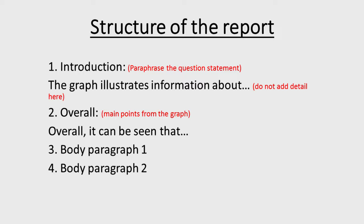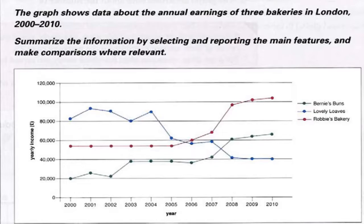Your next paragraph will be about the overall or general idea — just two to three main points that you have picked or understood from the graph. Write them down shortly and briefly without giving any extra detail. You can start these paragraphs by using the words 'in general' or 'overall'. Now let's generate more information that would help us write detailed paragraphs.